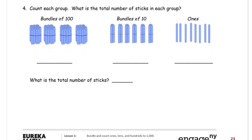Count each group. What is the total number of sticks in each group? Now these are bundles of 100. So that's 100, 200, 300. Actually they're all 100, right? But there's 4 of them. There's 100 in each bundle. So that's 1, 2, 3. That's 400.